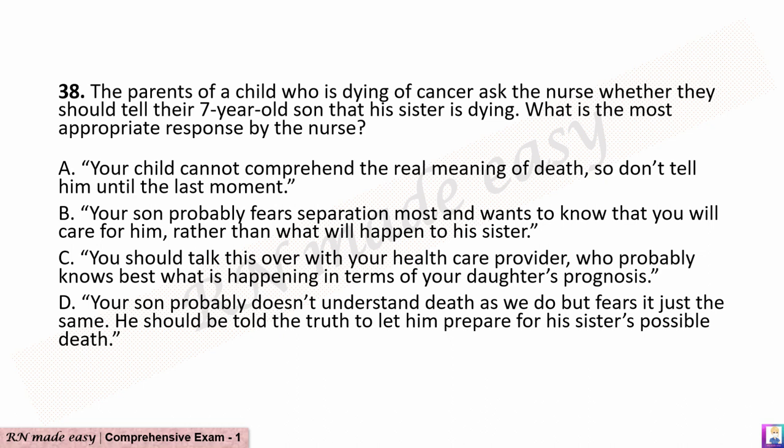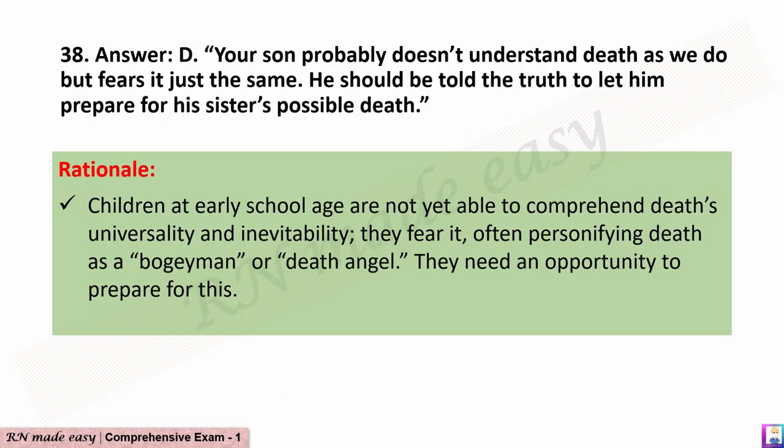The correct answer is D: Your son probably doesn't understand death as we do but fears it just the same. He should be told the truth to let him prepare for his sister's possible death. Rationale: Children at early school age are not yet able to comprehend death's universality and inevitability; they fear it, often personifying death as a bogeyman or death angel. They need an opportunity to prepare for this.